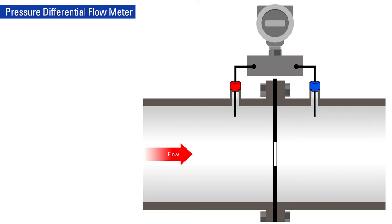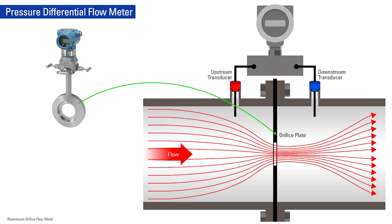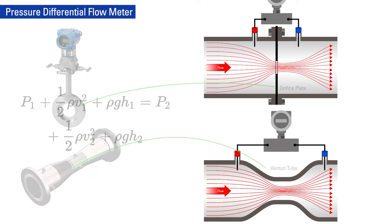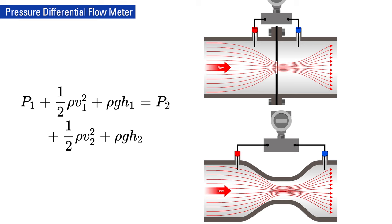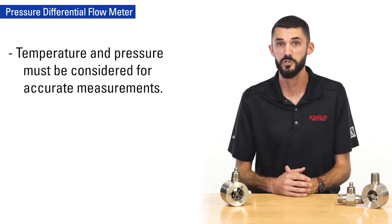The third type of flow meter we'll talk about is a pressure differential meter. A pressure differential meter operates by measuring a pressure drop across a fixed obstruction inserted into the flow path. Both orifice plates and venturi tubes operate by restricting flow, which causes pressure to drop. The pressure differential created allows flow monitors to determine the flow rate using Bernoulli's equation. Temperature and pressure must be considered for accurate measurements.